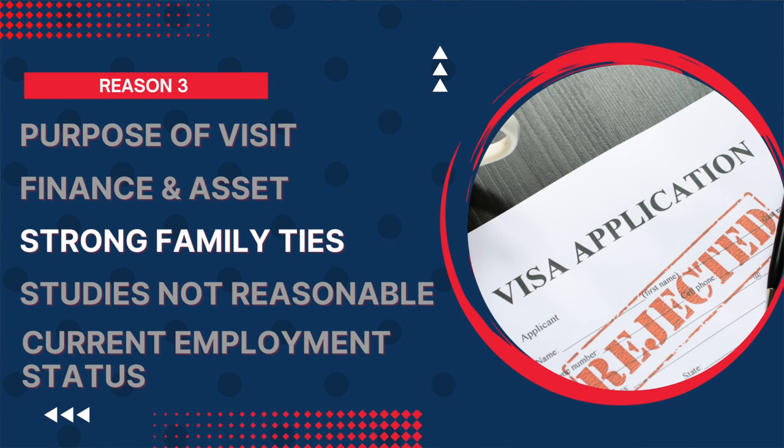The third rejection reason, which we also see in visitor visa cases, is that you have strong family ties in Canada or you do not have strong family ties in your home country. If you are from India, for example, and you have no family members there but many family members in Canada, that raises concerns. If you have property, a vehicle, or other assets in India, you should mention them.